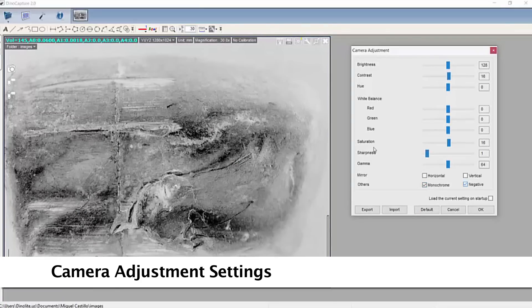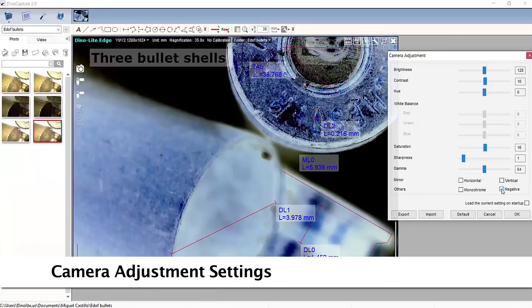Some adjustable camera options include white balance, brightness, contrast, hue, as well as negative and monochrome modes and more.